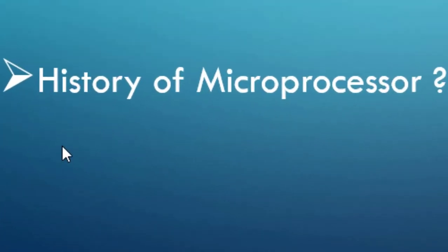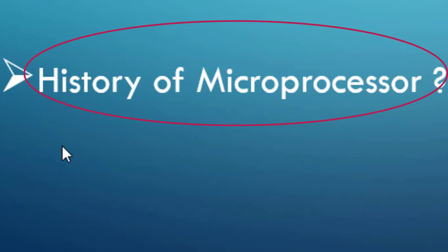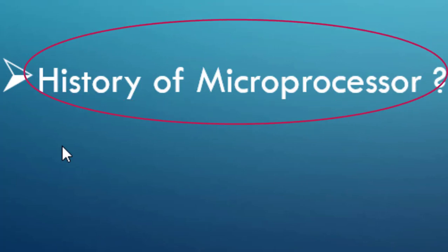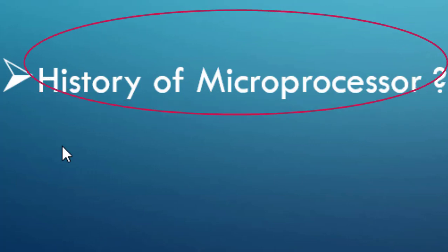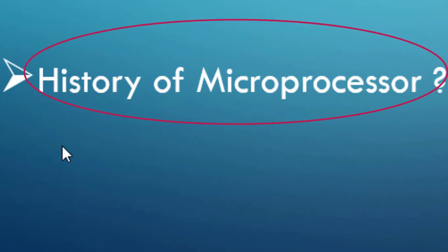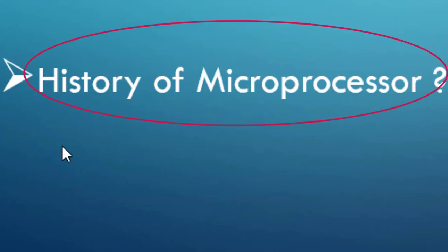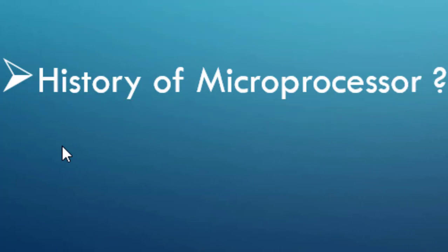Talking about the history of microprocessors: the first processor was developed by Intel in 1971, and that was the 4-bit microprocessor 4004. Within one year, Intel came up with the second microprocessor, which was the 8-bit microprocessor 8008 in the year 1972. After that, the 8080 was a major step towards commercial microprocessors.